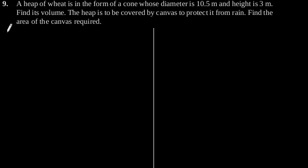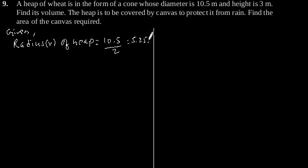Given: Radius R of heap will be 10.5 divided by 2, which equals 5.25 meters. Height H of heap is equal to 3 meters.